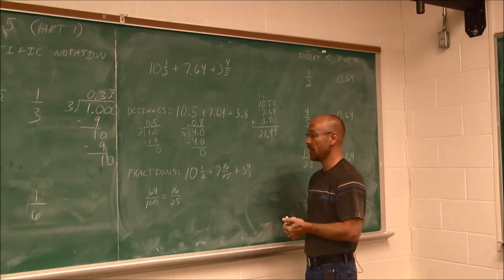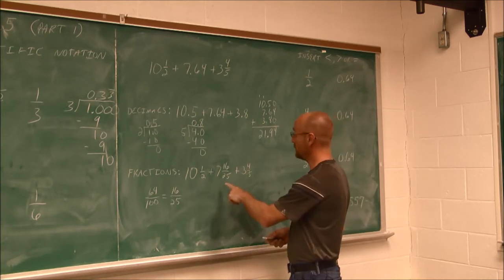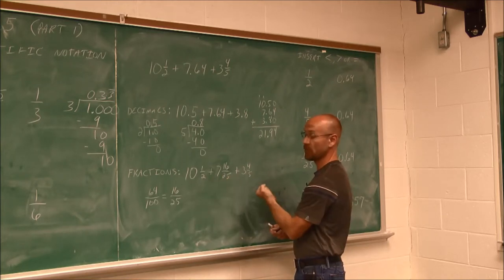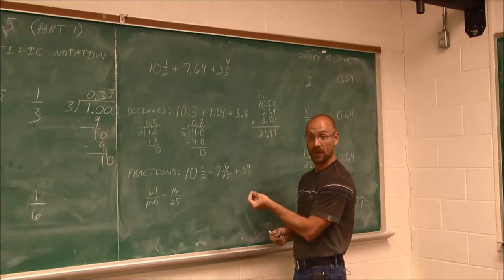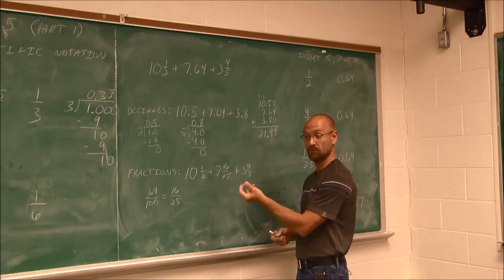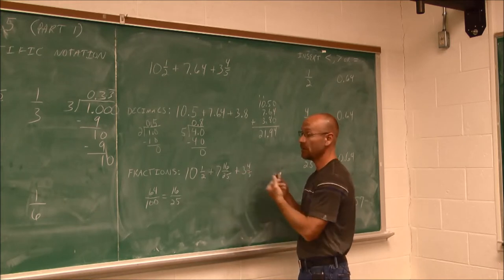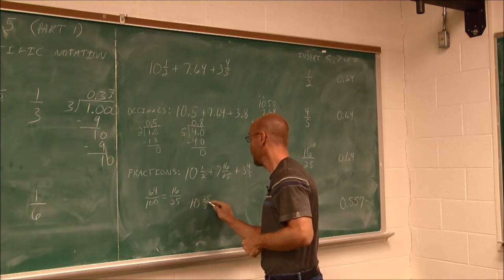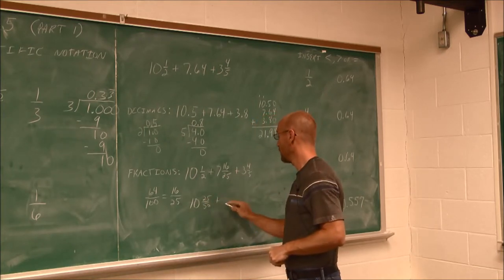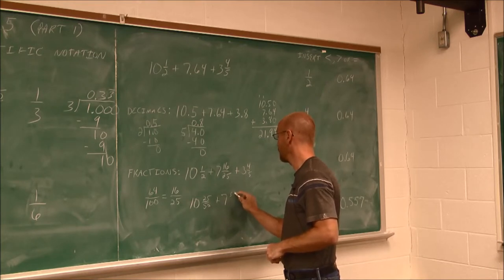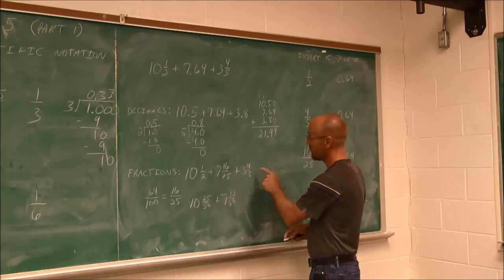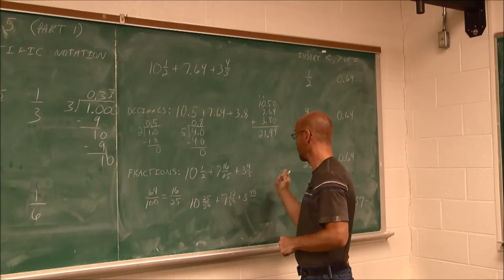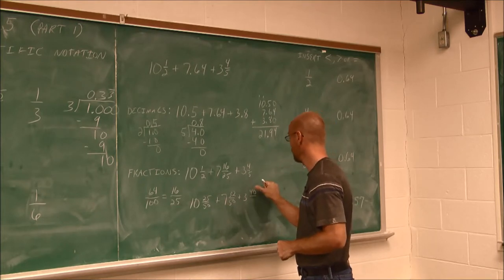To add these, I have to find a common denominator. The common denominator of 2, 25, and 5. This has two factors of 5, this has a factor of 2. Two factors of 5 is 25. Factor of 2 is 2. 2 times 25 is 50. My LCD is 50.